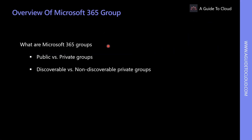When creating a Microsoft 365 Group, you must decide if you want it to be a private group or a public group. Any user in your organization can join public groups without the need of an administrator or owner to add or approve them. Therefore, content in a public group can be seen by anybody in your organization as soon as they join the group.